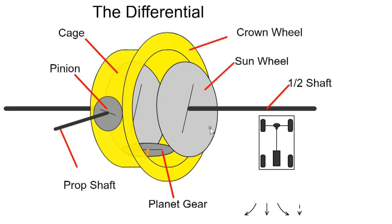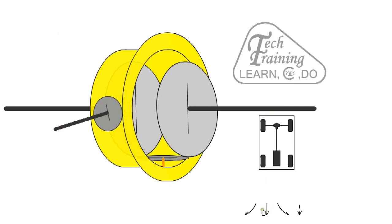When the car drives in a straight line, the input pinion rotates the crown wheel. The planet gear revolves with the cage but does not spin. The planet wheel, in turn, rotates both sun wheels at the same speed, transmitting power to the road wheels.